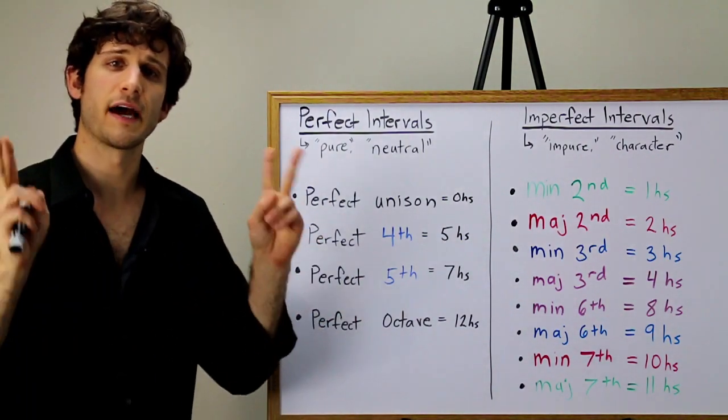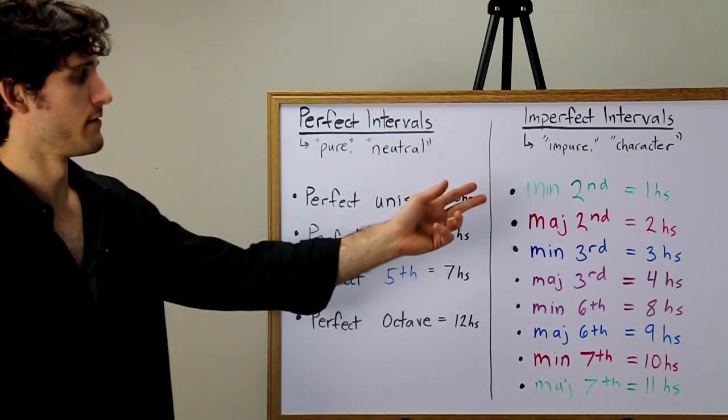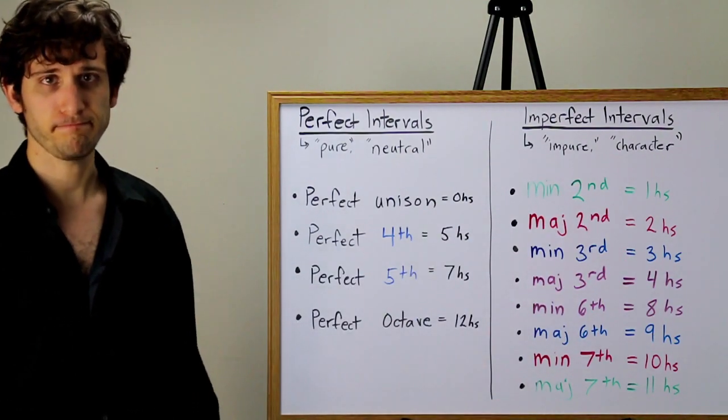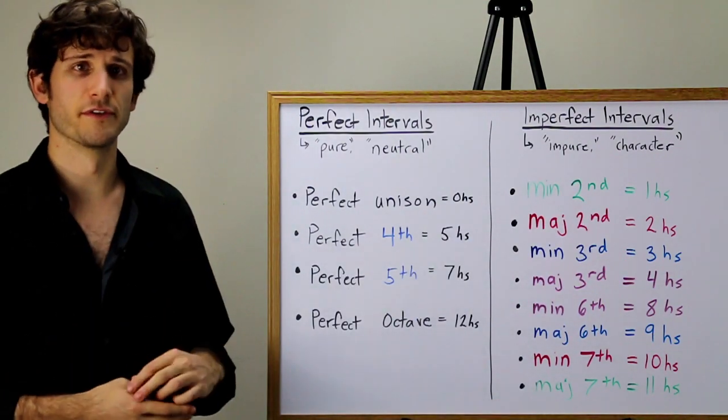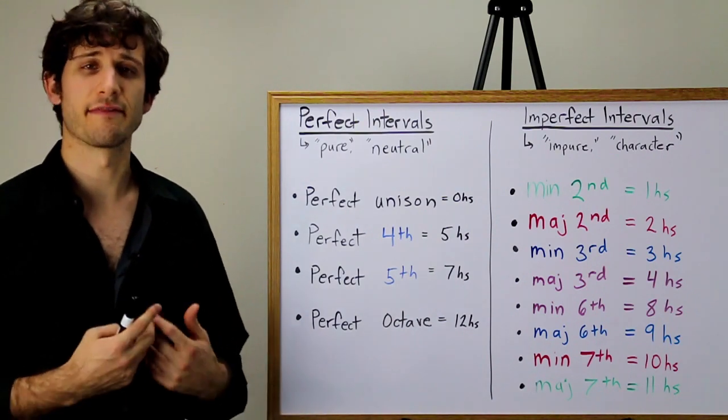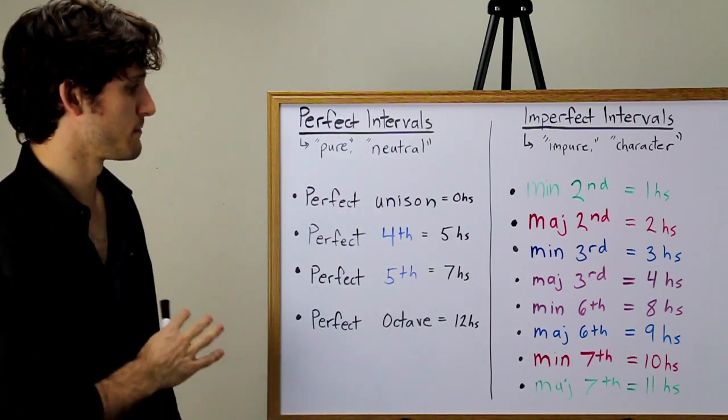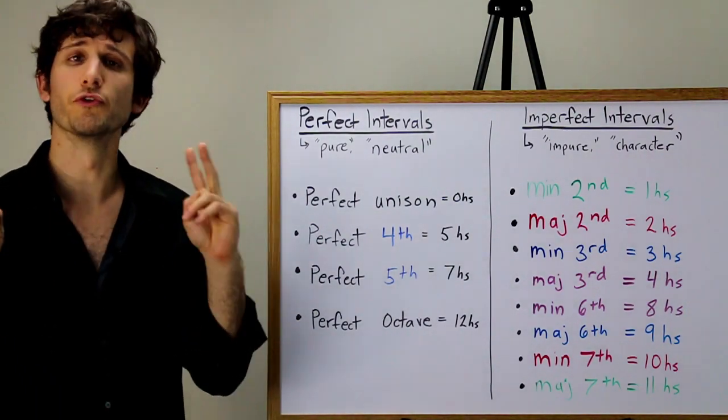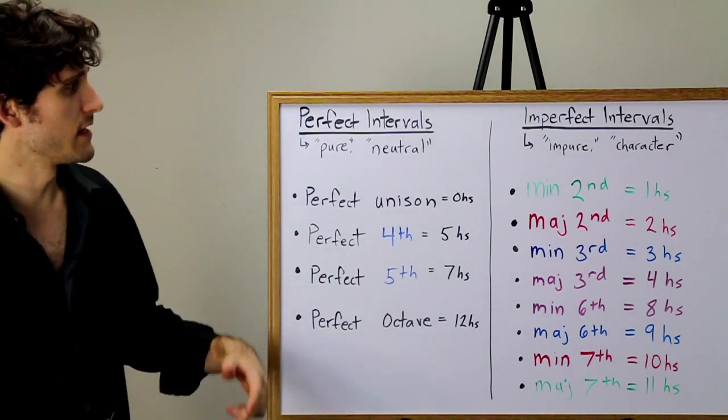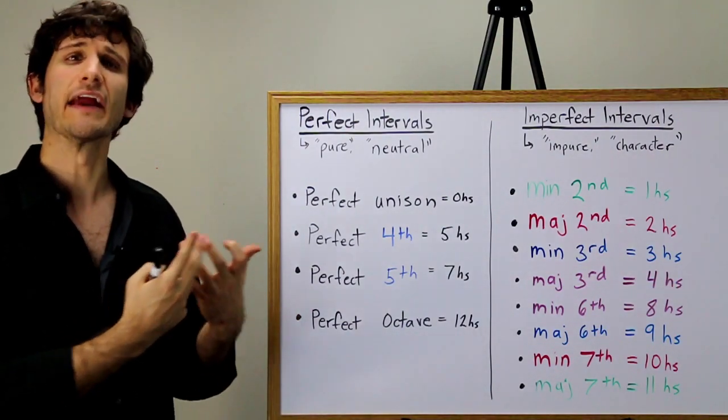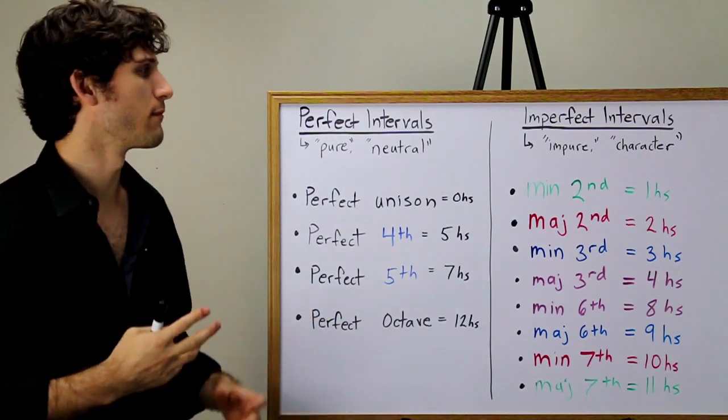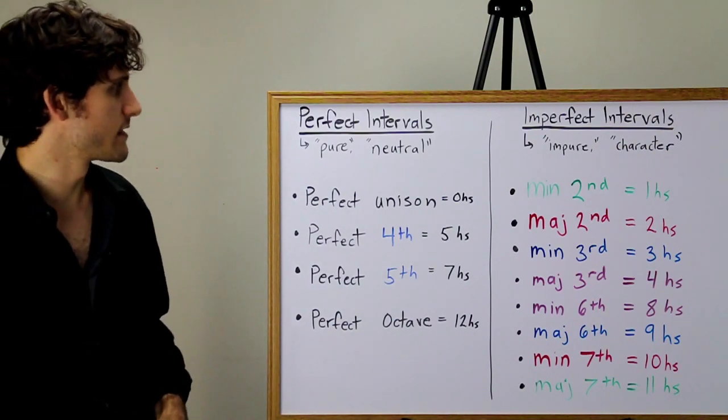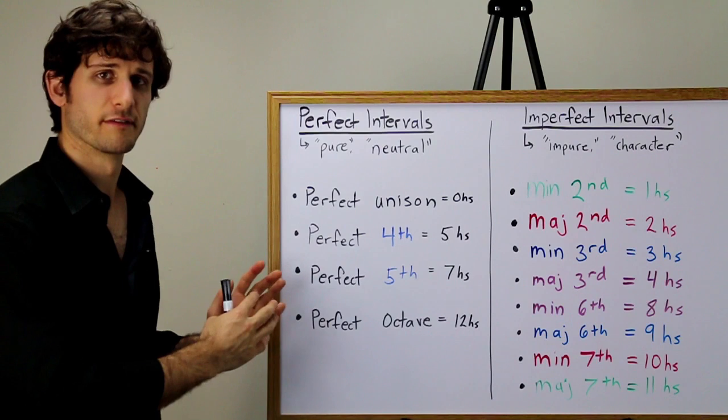The imperfect intervals are thought to be not as pure as the perfect intervals. We have the minor and major seconds, minor and major thirds, minor and major sixths, and minor and major sevenths. The purity of these intervals is obviously completely subjective. But I think that you'll find by listening that there is some truth to this basic grouping. The perfect intervals have more purity. They're more neutral than the imperfect ones. And the imperfect ones have a little bit more of an impurity. They have more character or more bite. They're more harmonically impactful than the perfect ones. So that's the basic distinction between these two groupings. Perfect versus major and minor.